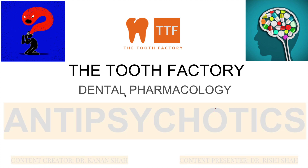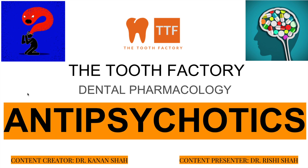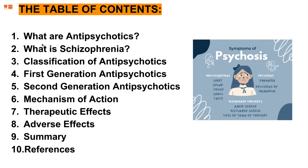Welcome to another video at the Tooth Factory. We continue our central nervous system pharmacology series with antipsychotics. Dr. Conish has put together a brand new lecture. Today's table of contents covers antipsychotics, schizophrenia and psychosis, first and second generation classification, mechanism of action, therapeutic effects, adverse effects, and a summary followed by references.